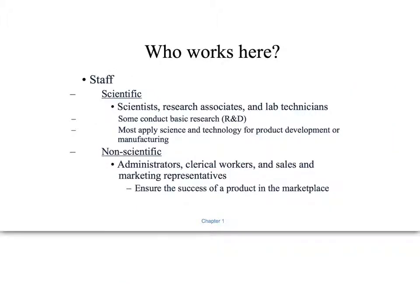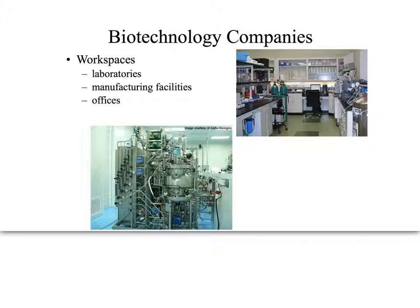There are all sorts of staff at these places. Scientific staff includes scientists, research associates, and lab technicians. Then there are lots of non-scientific jobs: accountants, administrators, grant writers, clerical workers, people answering phones, sales representatives marketing drugs, and many more. There's a whole variety of people that work at these places.